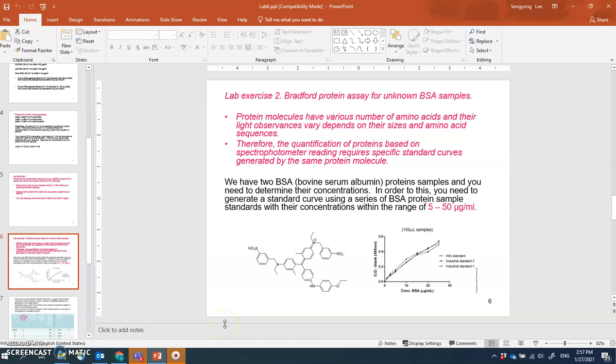The Bradford assay requires adding a chromogenic reagent to your protein. The reason is protein molecules do not have uniform structure - it depends on their amino acid sequences. Their light absorbance patterns are totally different.